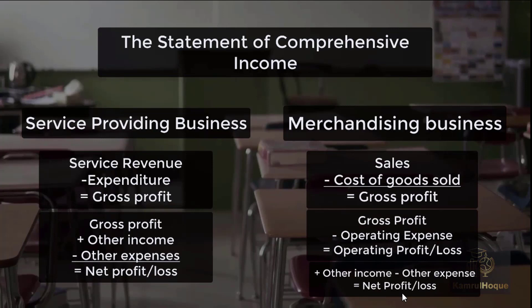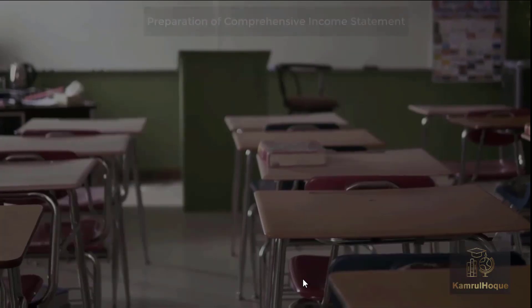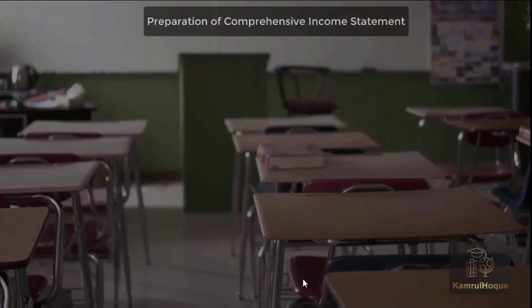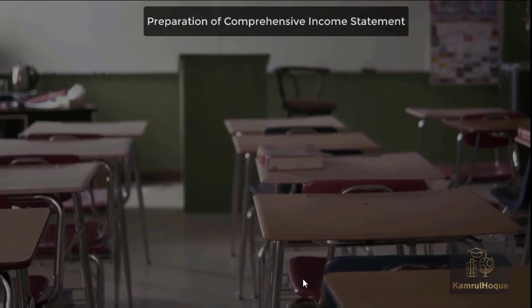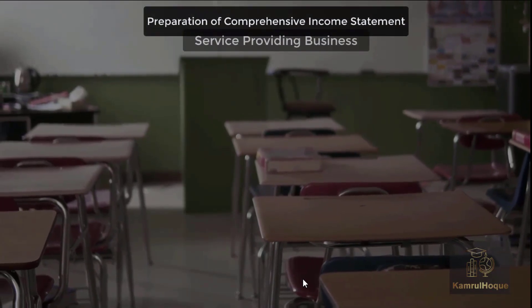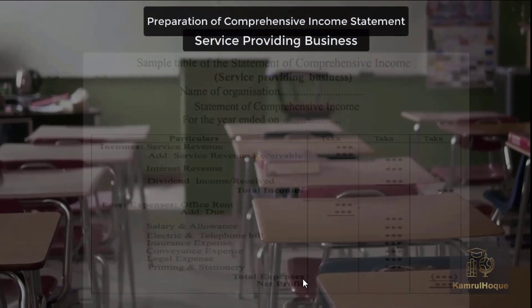So the statement of comprehensive income involves two categories: service providing business and merchandising business. In both cases, we arrive at net profit and loss. Now let's look at the preparation of the comprehensive income statement. How do we prepare it? Here is an illustration for a service providing business.